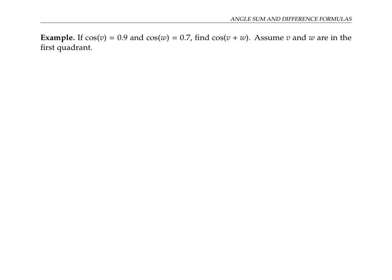For our last example, let's find the cosine of v plus w, given the values of cosine v and cosine w, and the fact that v and w are angles in the first quadrant. Remember, to compute this cosine of a sum, we can't just add together the two cosines. That wouldn't even make sense in this case, because adding 0.9 and 0.7 would give something bigger than one, and the cosine of something's never bigger than one.